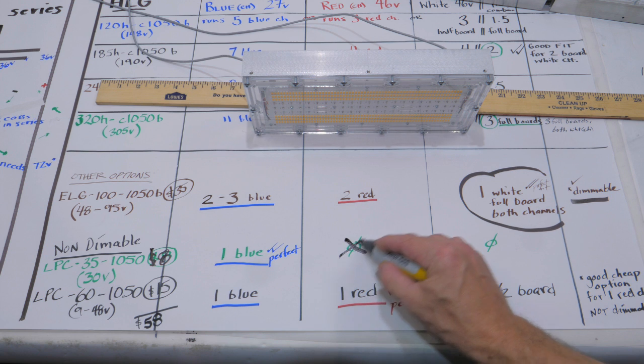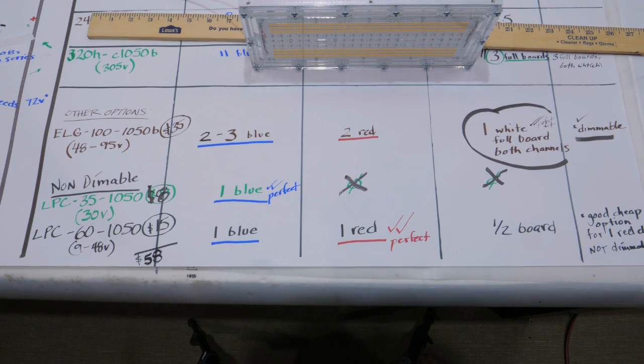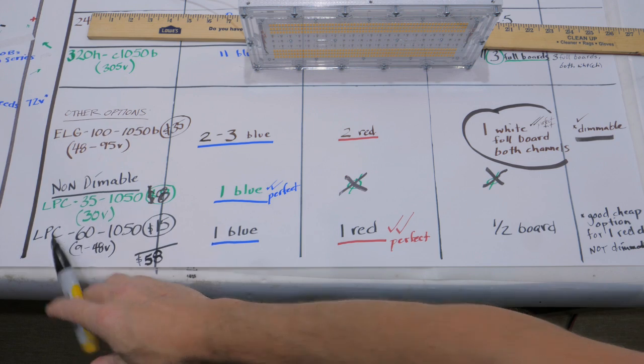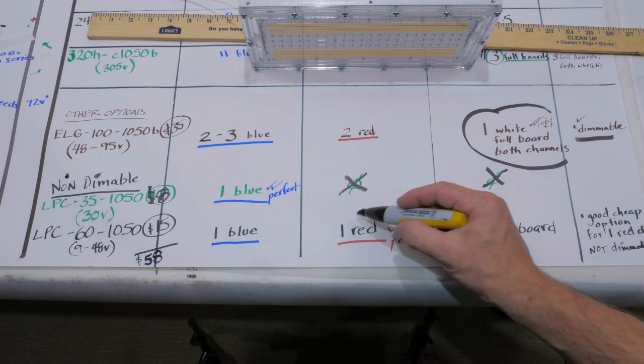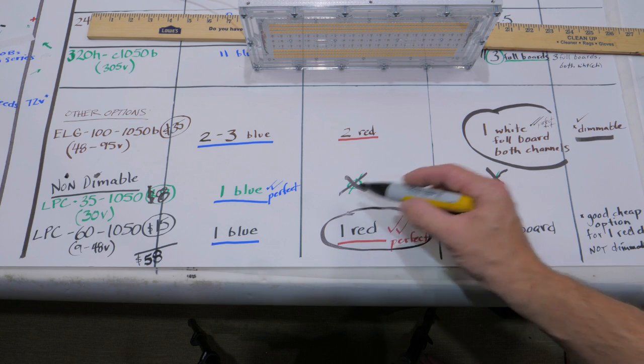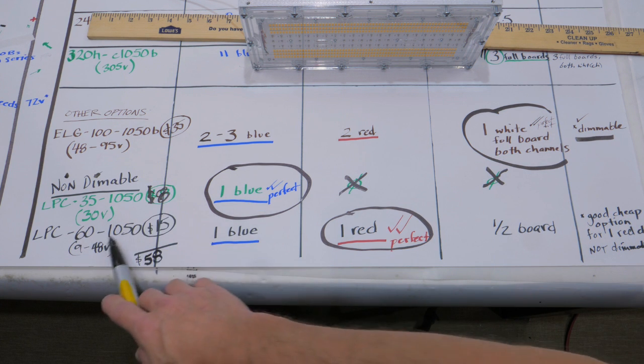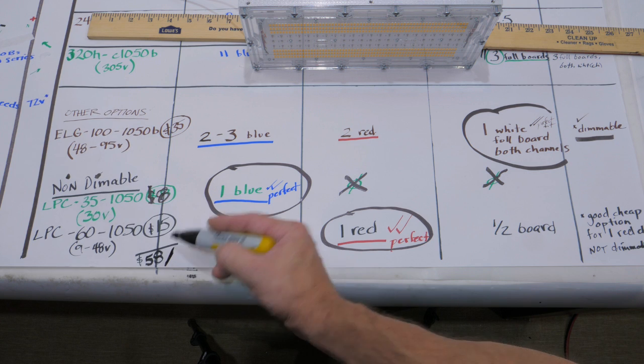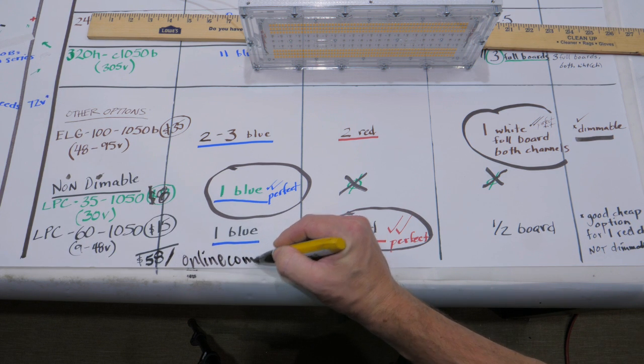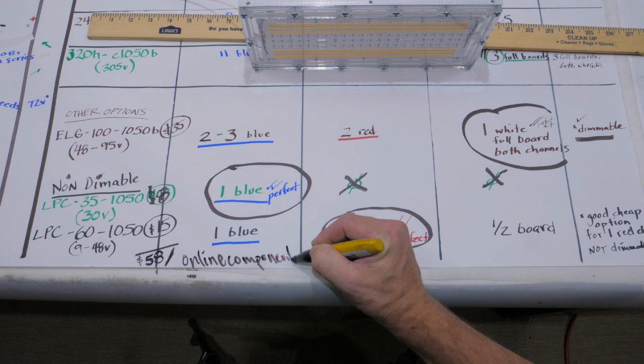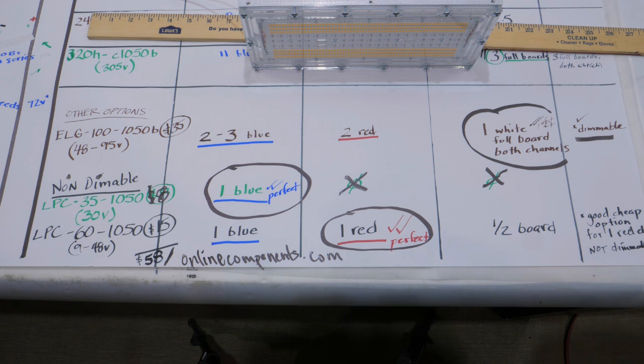As you go cheaper, you lose your dimmability. The LPC 35-1050, which is in green here, it's an $8 driver and it's perfect just for turning your blues on or off, but it's not dimmable unfortunately. It has the perfect amount of voltage to just run that blue channel, and for $8 you can't beat it. Last one on the list is the LPC 60-1050. It's a $15 driver with 48 volts and it runs the red channel on a single board absolutely perfectly. This whole setup would run you $58 for the ELG and the two LPCs. You can get them from onlinecomponents.com. Obviously you're welcome to use Growmau5 at Rapid if they've got this stuff.